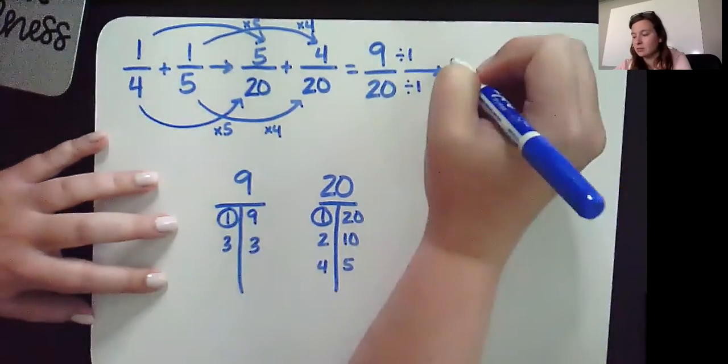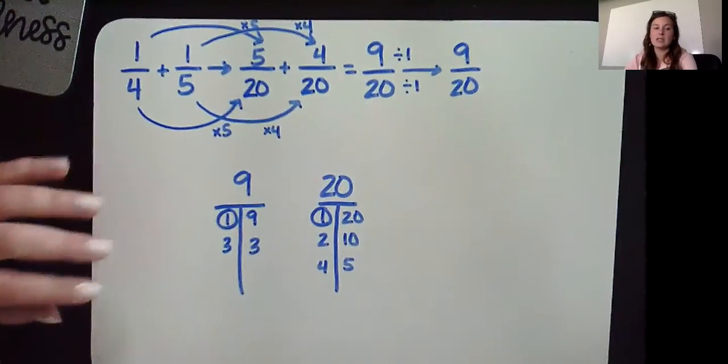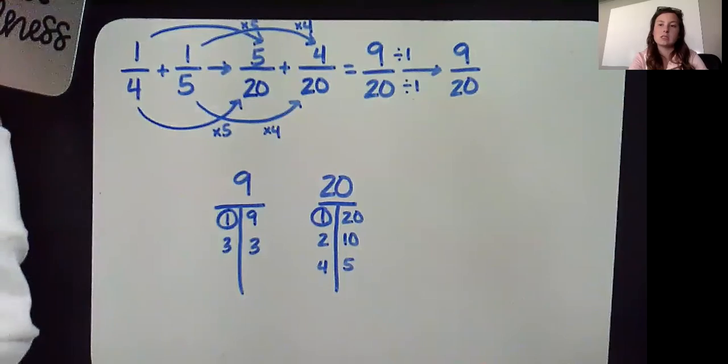If we divide it by 1, we'll get the same answer. So 9 twentieths is your final answer in simplest form.